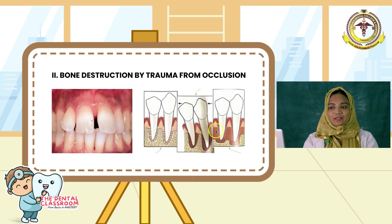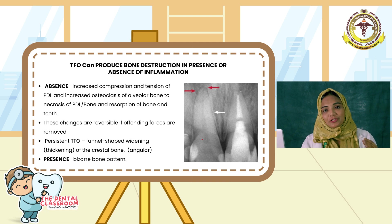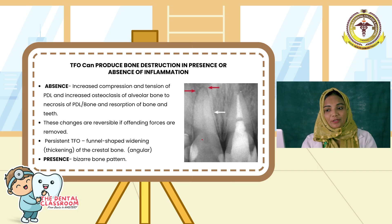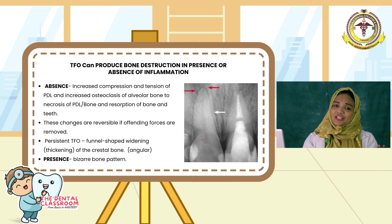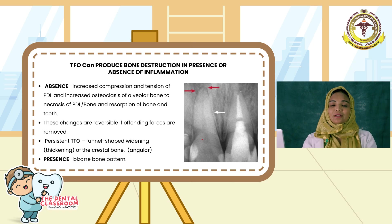Moving on to the second important factor causing bone destruction: trauma from occlusion. It is the tissue injury that results due to excessive occlusal forces exceeding the adaptive capacity of the periodontal tissues. It can be produced either in the presence or absence of inflammation. When there is absence of inflammation, trauma from occlusion causes increased compression and tension of the periodontal ligament fibers causing necrosis, and also stimulates osteoclastic cells causing bone resorption. These changes are reversible when the offending forces are removed. You can see in the radiograph there is thickening of the cervical margins of the interdental bone. When there is presence of inflammation, the destruction will be advanced, resulting in a bizarre bone pattern.